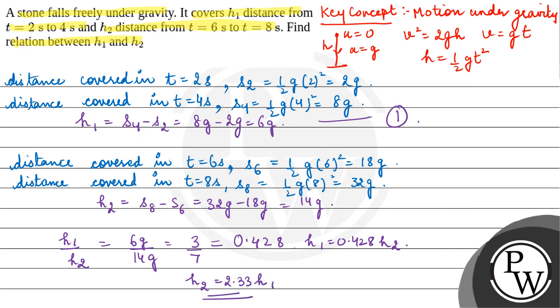So the distance covered in the time t equals 6 to 8 seconds is more as compared to the distance covered in t equals 2 to 4 seconds. This is our final answer. I hope you understood it well. Best of luck.